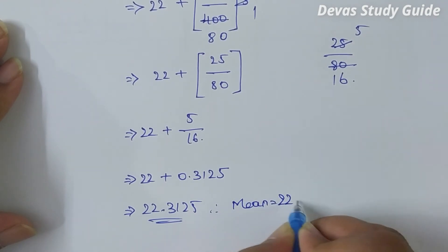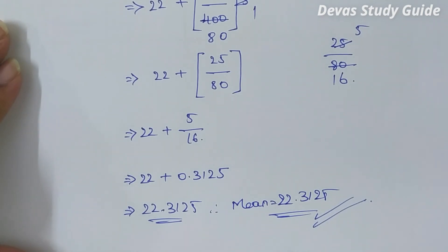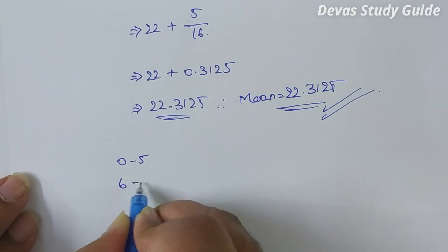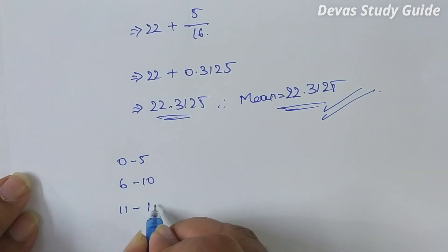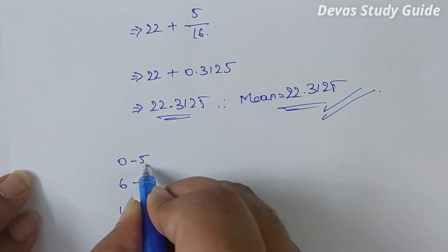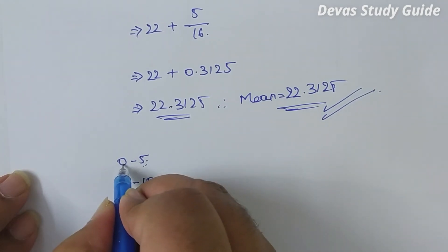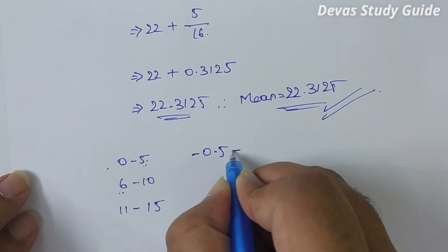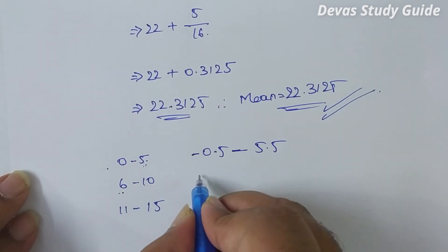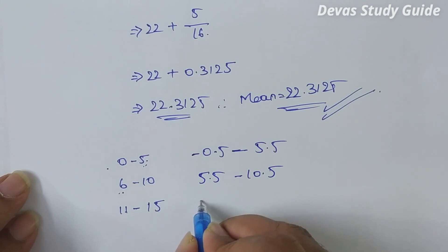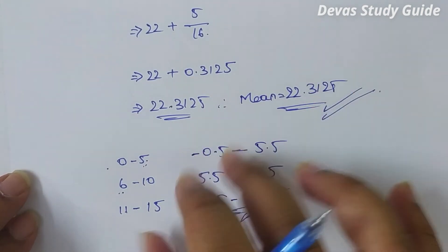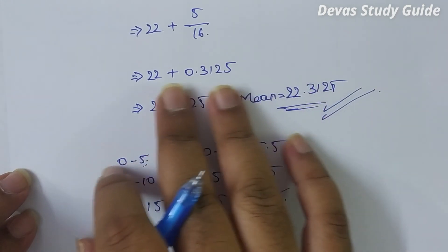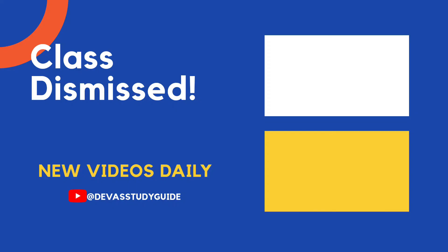Therefore, mean is equal to 22.3125. Subscribe, like and share. Thank you.